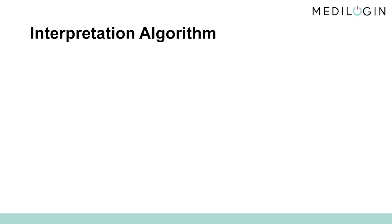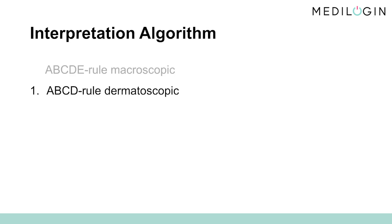The image interpretation algorithm is the same for every melanocytic skin lesion. Therefore, get used to a uniform procedure straight away, in order not to miss anything. Before you look at a skin lesion under the dermatoscope, first look at it macroscopically, and apply the ABCDE rule. We'll discuss this in detail presently. You will then place your dermatoscope over the lesion, and check whether the macroscopic impression corresponds to the dermatoscopic impression, all the while observing the ABCDE rule. After this, take a look at the basic pattern, and any other patterns.